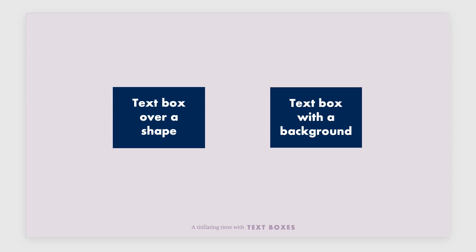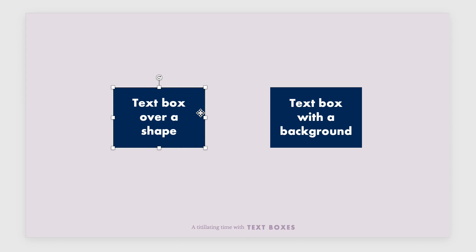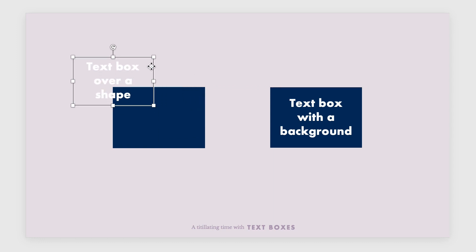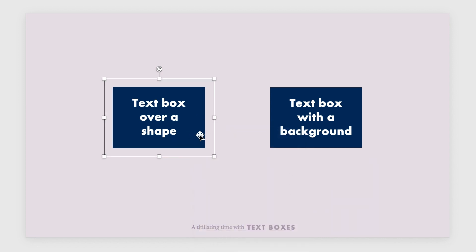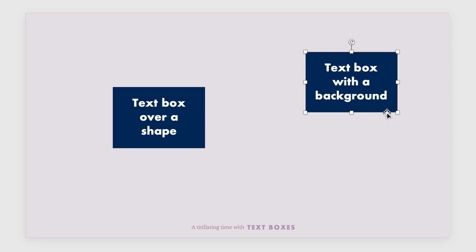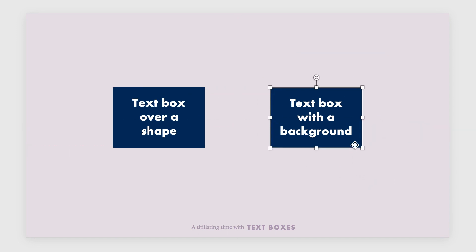Looking at this slide, both boxes look pretty much the same — dark blue background with white text — but if I select the one on the left, you can see it's actually made up of two elements: the dark blue box and a text box over top. If I click one element and move it, the other gets left behind. If I want them to move together, I select both, right-click, group, and now the two elements move as one. The box on the right already moves as a single element.